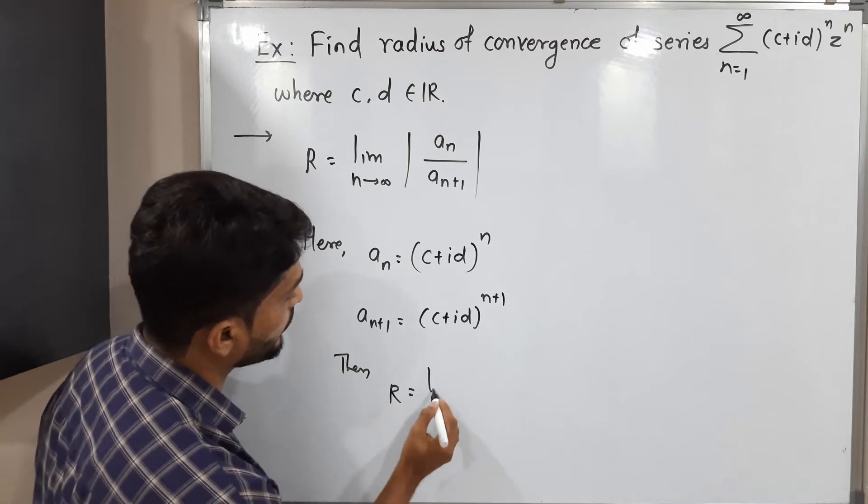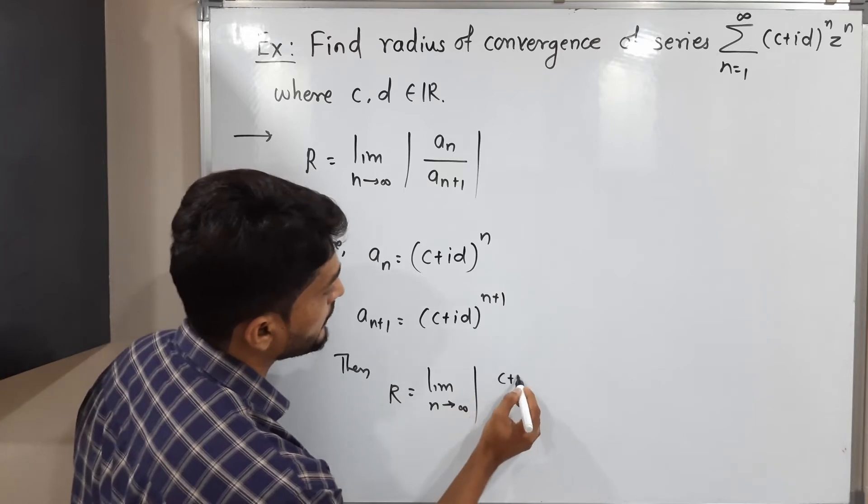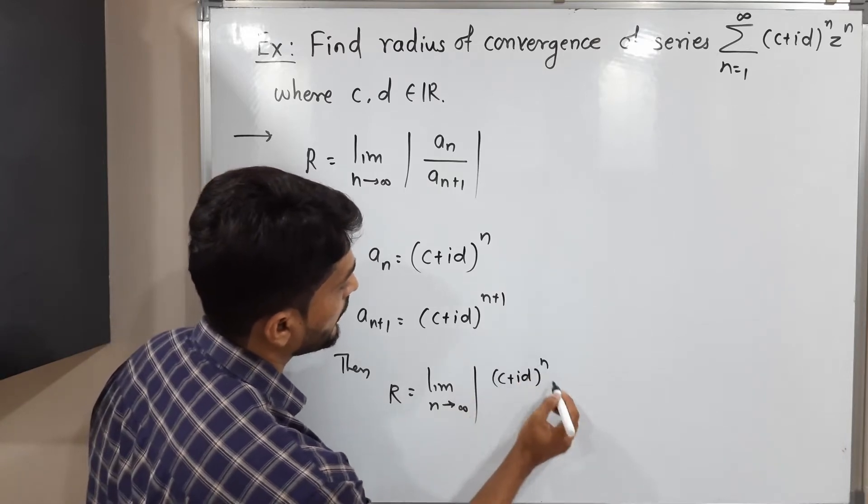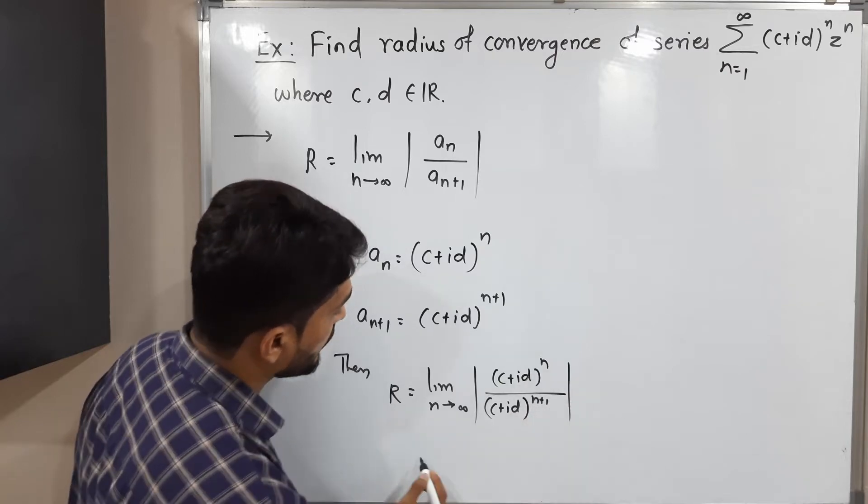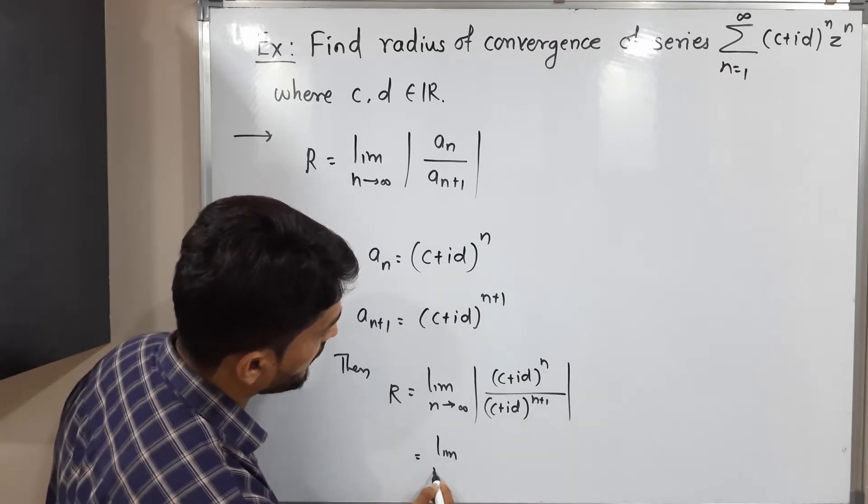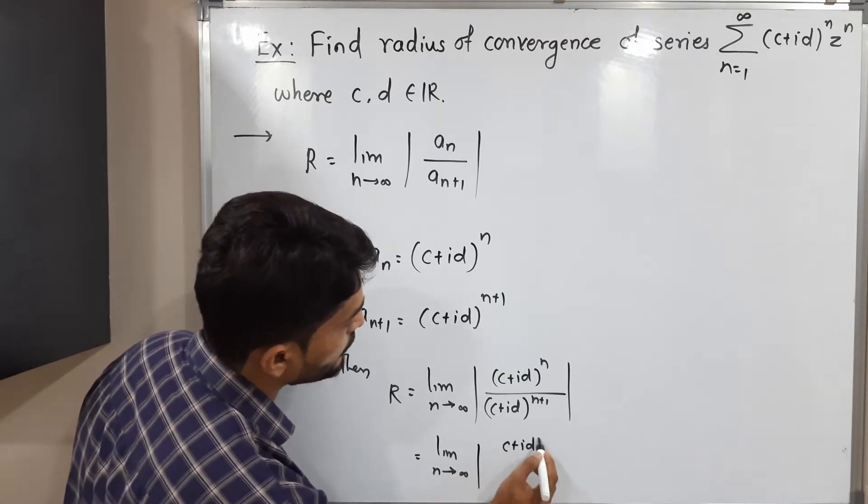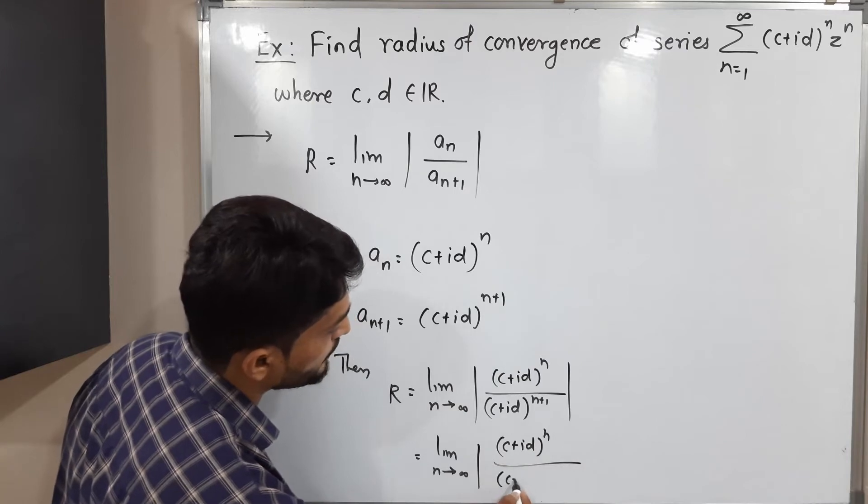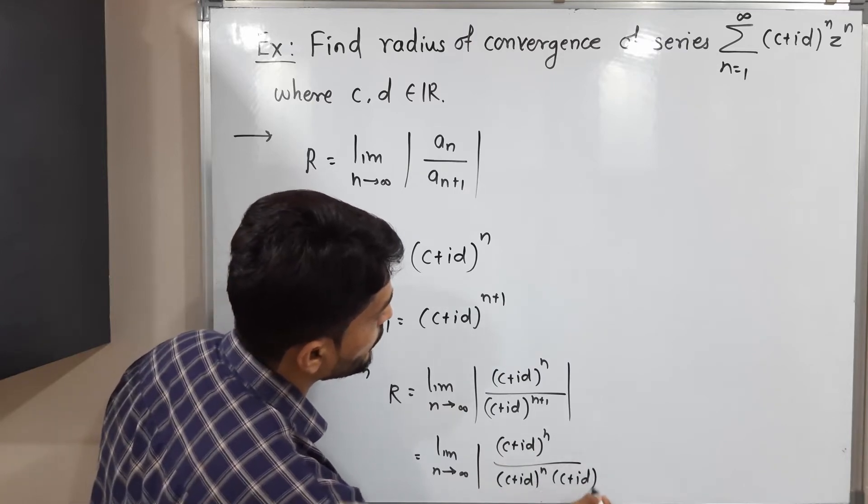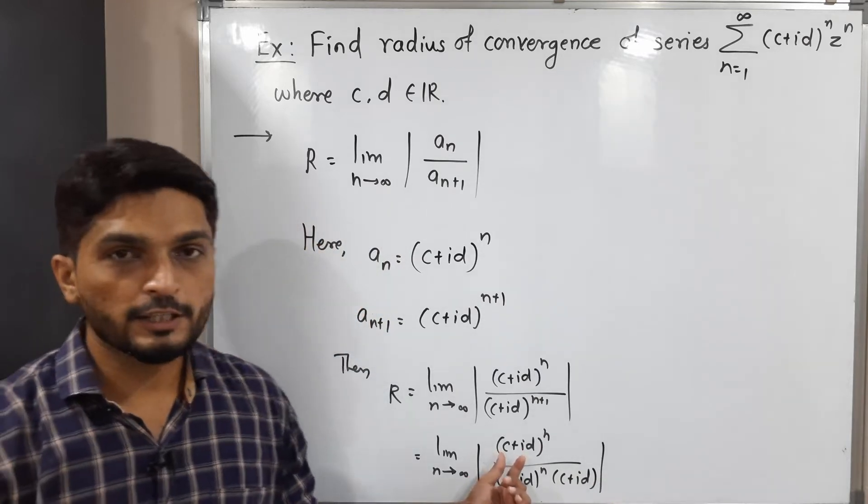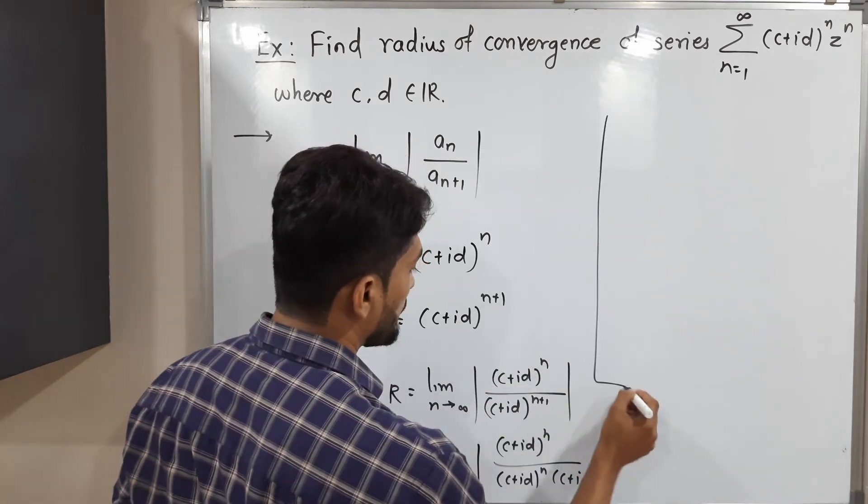So R is equal to limit n tends to infinity mod, a_n is (c plus id) raised to n, and here (c plus id) raised to n plus 1. You know that (c plus id) raised to n plus 1 can be expressed as (c plus id) raised to n into (c plus id). So what will happen? (c plus id) raised to n will get cancelled, so we will have limit n tends to infinity mod 1 upon (c plus id).